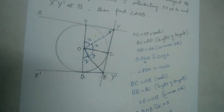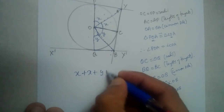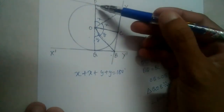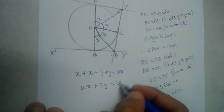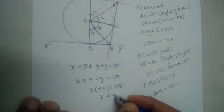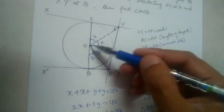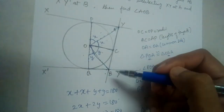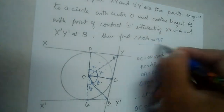PQ is a diameter and a straight line, so the whole angle equals 180 degrees. That means x plus x plus y plus y equals 180 degrees, so 2x plus 2y equals 180. Taking 2 as common, x plus y equals 90 degrees. Now, x plus y is angle AOB, which is what we needed to find. Therefore, angle AOB equals 90 degrees.